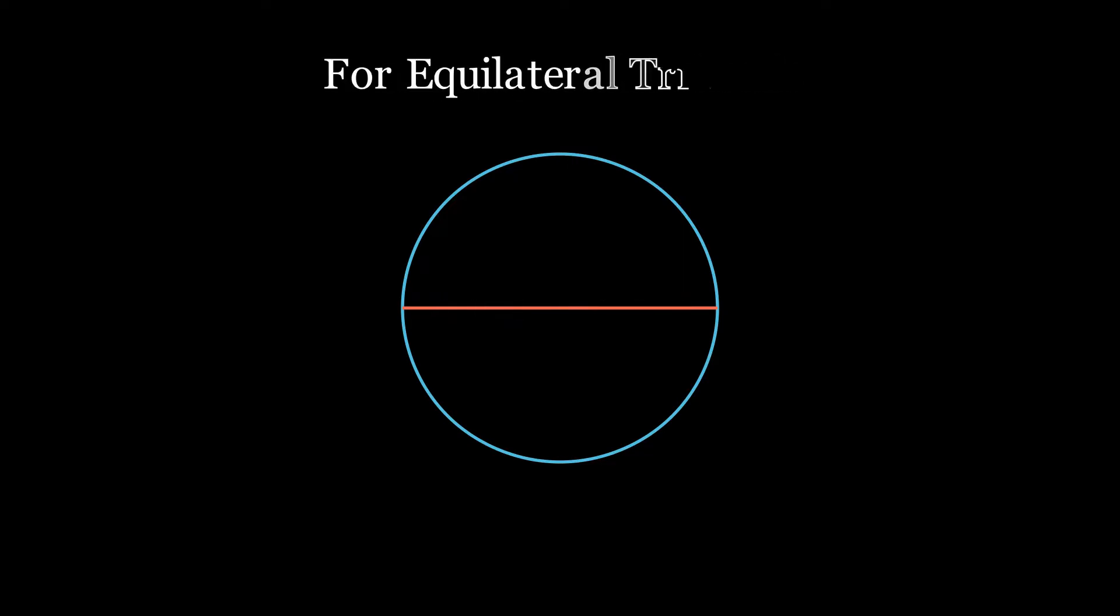Now consider an equilateral triangle. We will get something of this sort. If you take the chords, you observe that the points are at a distance of r from each other.